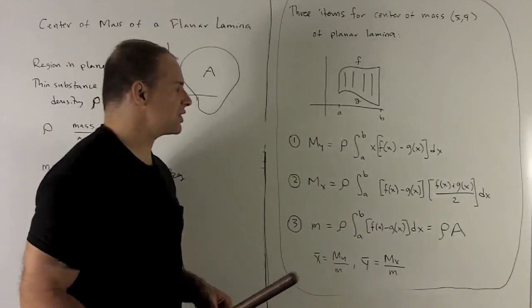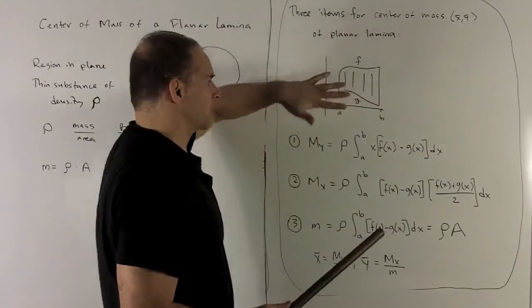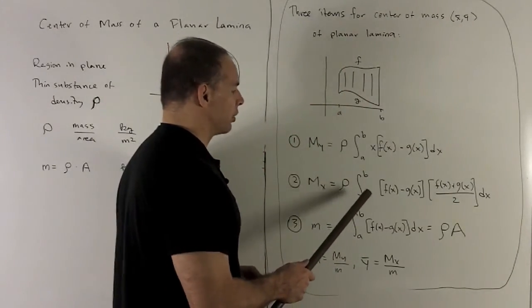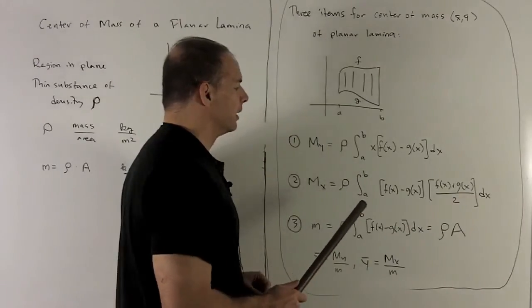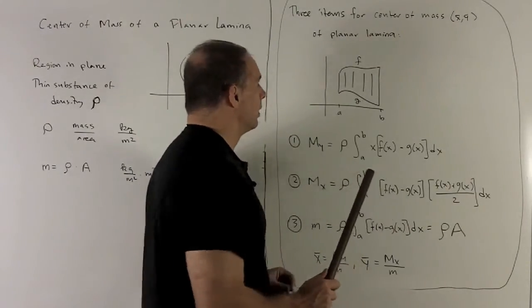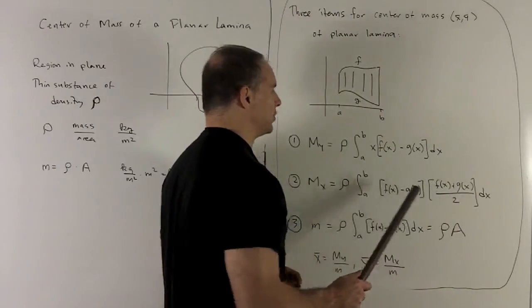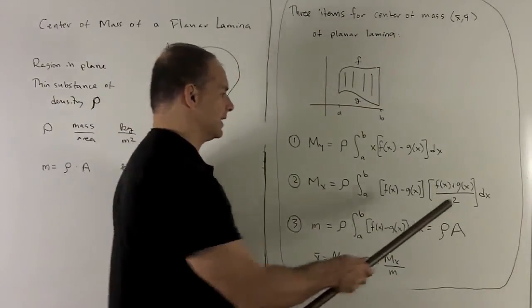For the moment about the x-axis, so that's going to be going this way. We look at rho, definite integral from a to b, difference in f and g, but now instead of x, we multiply by f plus g divided by 2, the average, and then dx.